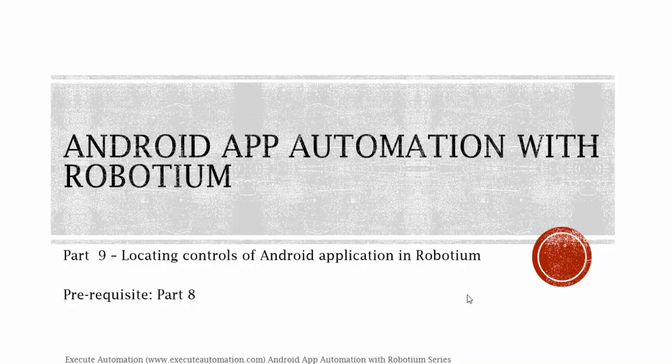Hey, hello guys, this is Karthik from executeautomation.com and this is part 9 of our Android app automation with Robotium series. In this part we're going to talk about locating controls of an Android application in Robotium. Before watching this part I would request you to watch part 8 since this part is going to be a continuation of that.